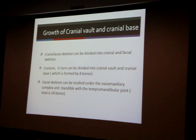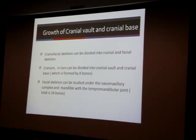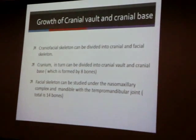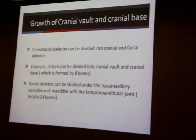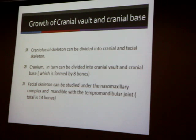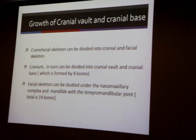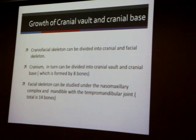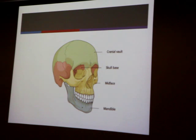The craniofacial skeleton can be divided into the cranium base and the facial skeleton. The cranium itself is subdivided into the vault and the cranium base, and it has eight bones — some of them single, some of them paired bones. The facial skeleton can be studied under the nasal, maxillary, and the mandible, and also the TMJ, making about 14. So the total craniofacial skeleton is 22. Here's what we're going to study today: the cranial vault and the skull base.